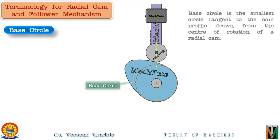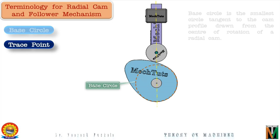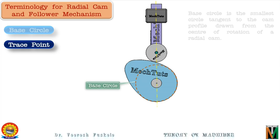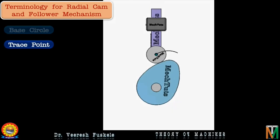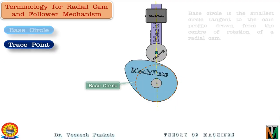The next term is trace point. To describe the motion of the follower for a translating or oscillating follower we need a point about which the motion of the follower will be described — this is the trace point. It is a theoretical point on the follower whose movement describes the follower movement. It is also defined as the point which traces the pitch curve as shown here. We will define the term pitch curve later on.